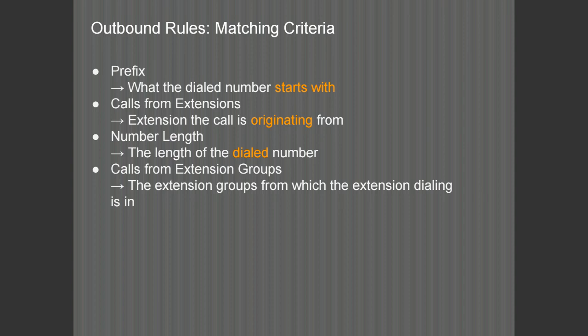There are four different outbound rule criteria which are available to be configured. First is the prefix — this is what the dialed number starts with. There are no wildcards available for the outbound rule prefix. Next is the call from extension or call from extensions field and criterion, which will limit the rule to a specific extension or number of extensions. This is where the call originates from.